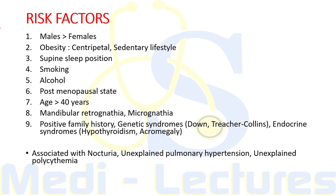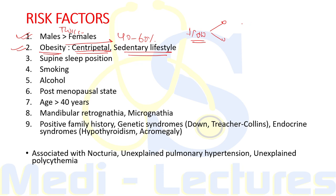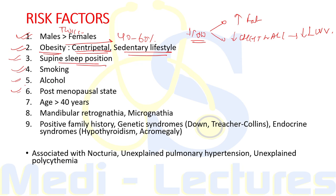Males are affected twice as commonly as females. Obesity is the second most important risk factor, with 40 to 60 percent of OSA patients being obese. The typical pattern of centripetal obesity is identified as a risk factor. Obesity causes narrowing of the upper airway due to increased fat deposition, decreased chest wall compliance, and decreasing lung volumes.